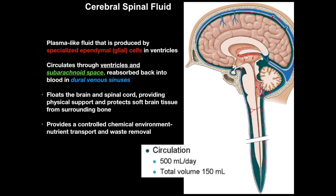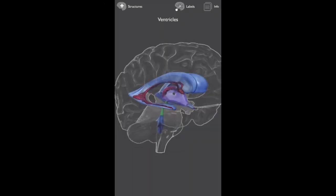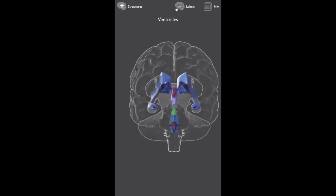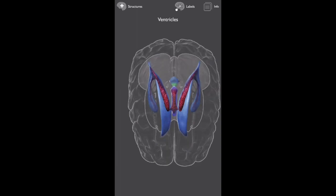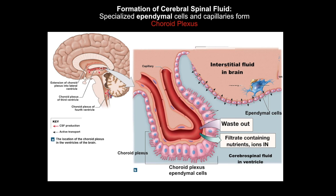CSF production begins with the choroid plexus — the red structures visible within each ventricle in these models. The choroid plexus is made of fine capillaries and specialized glial cells called ependymal cells, one of the four central nervous system glial cell types. Blood filtrate leaves the capillaries in the choroid plexus — one of the few places in the brain with free exchange between capillaries and brain tissue. This filtrate, along with oxygen and glucose, may also contain toxins, pathogens, and neurotransmitters circulating in the blood.